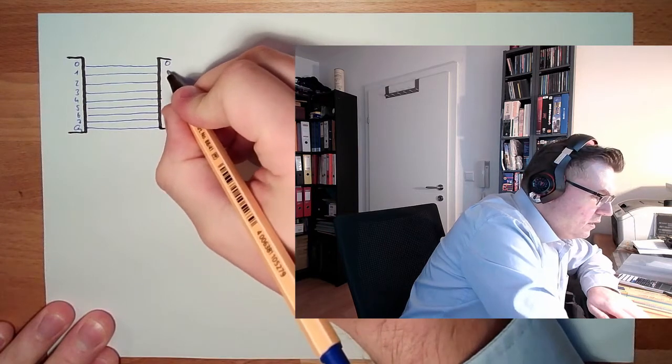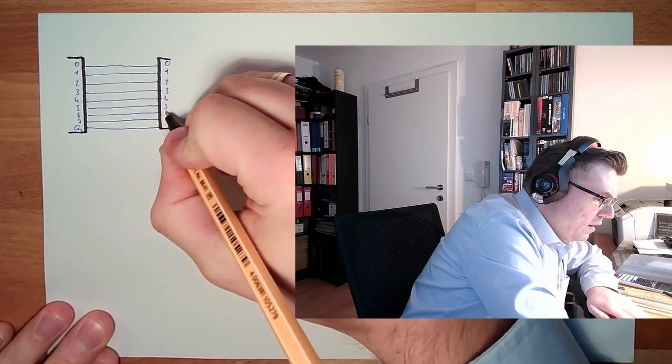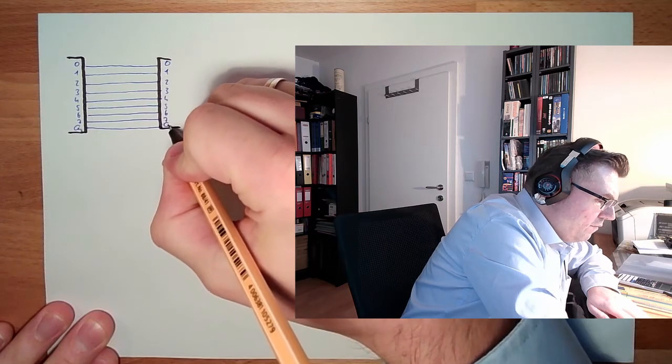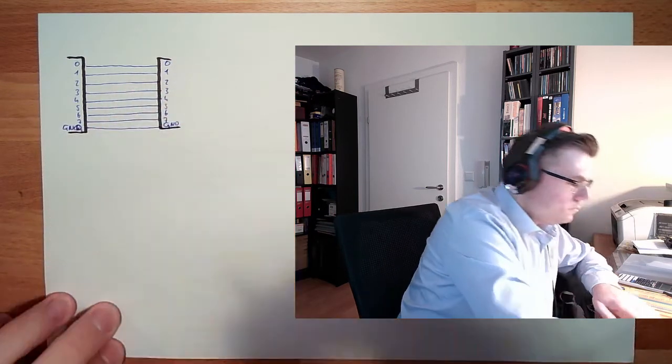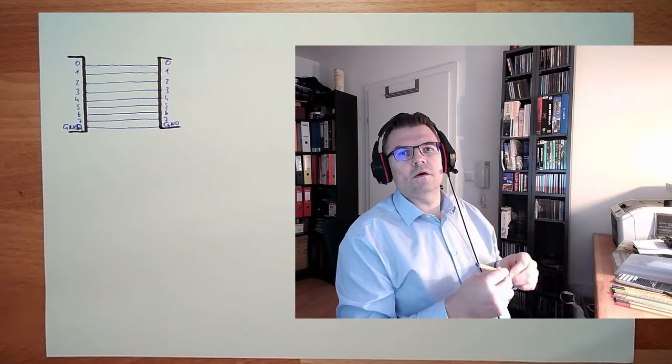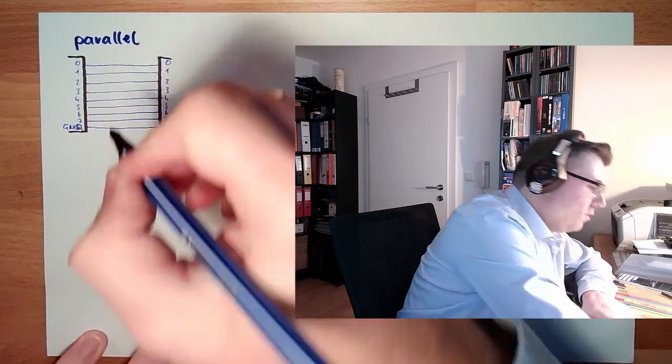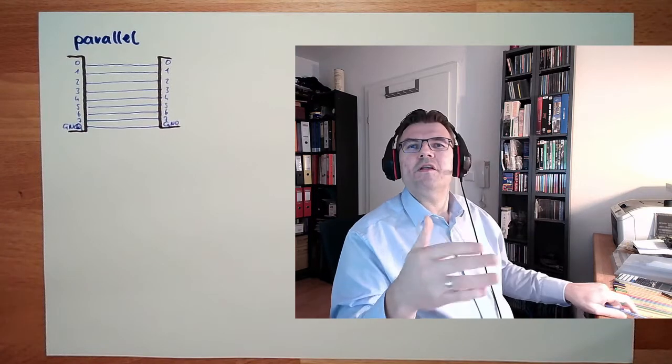And also here one, zero, one, two, three, four, five, six, seven. Here we have ground. This is how this is working. This is called parallel, because all bits are transferred in parallel.